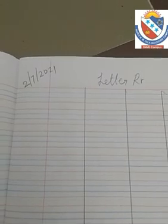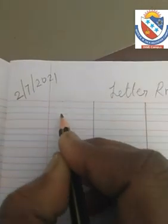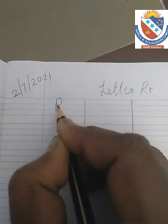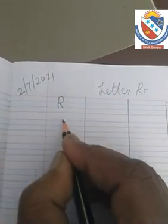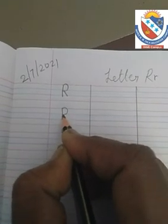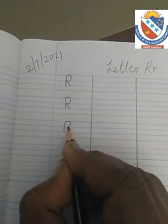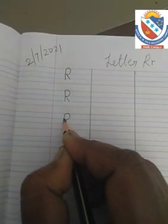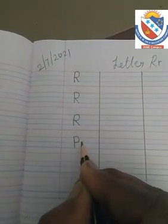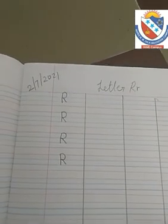First, we write capital R — Mama R. How to write Mama R? Start from the top red line down to the second blue line — make a standing line. Then go to the top, make a curved line to the first blue line, then make a slanting line to the second blue line. This is Mama R.